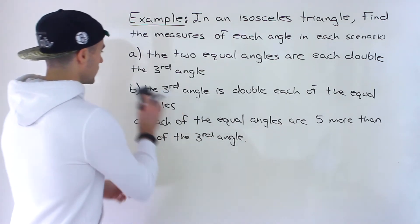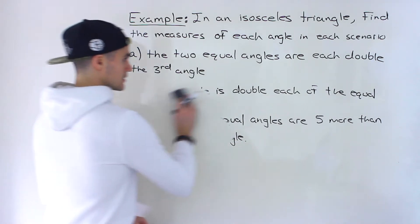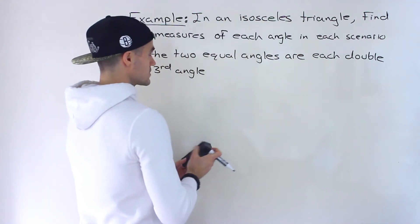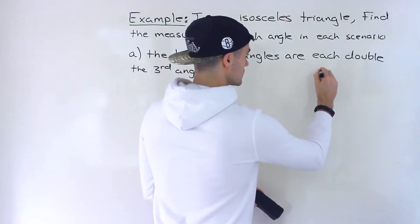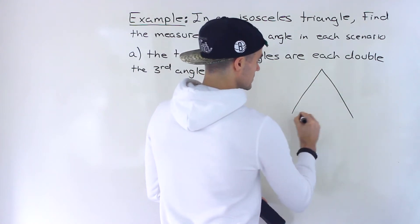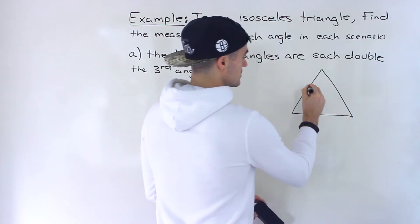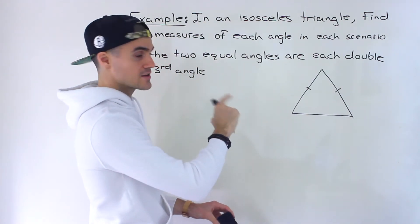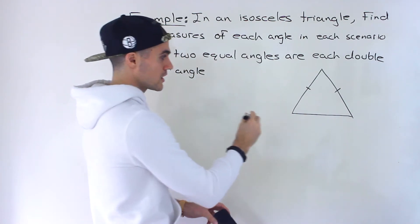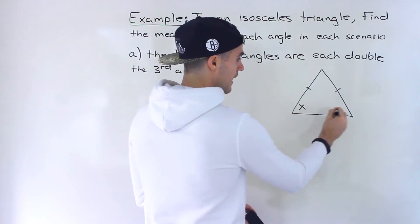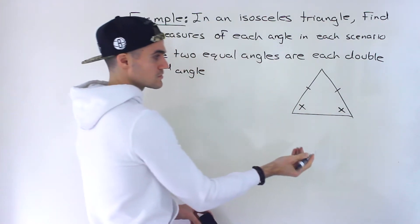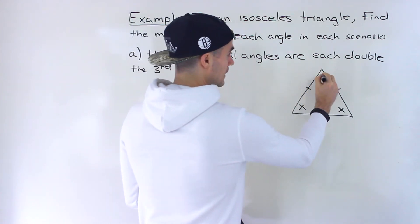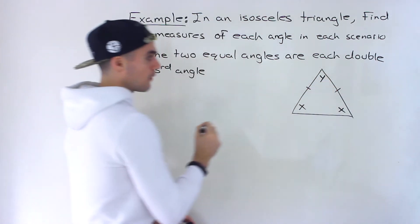Before getting into these, let me create some room and show you a diagram of what's going on. So let's say we have an isosceles triangle and these two sides are equal. If those two sides are equal in an isosceles triangle, then we know that these two angles are going to be equal. I'm going to label them x. And then we have this other remaining angle — let's label that y.